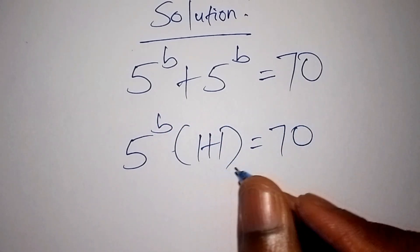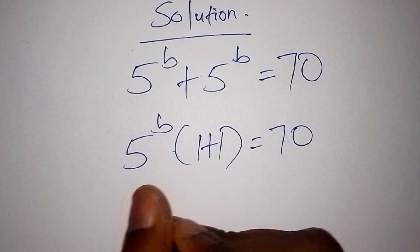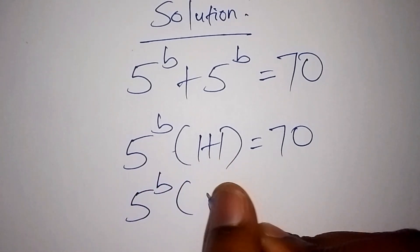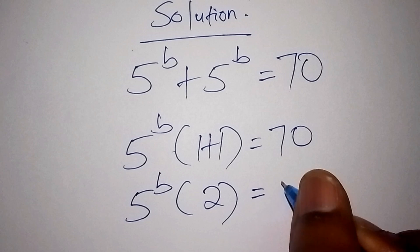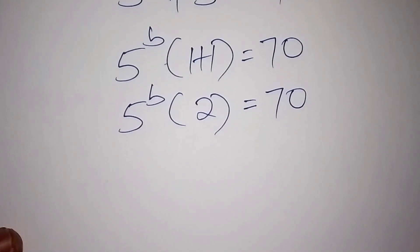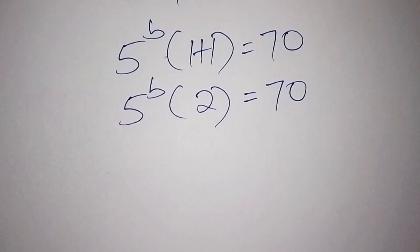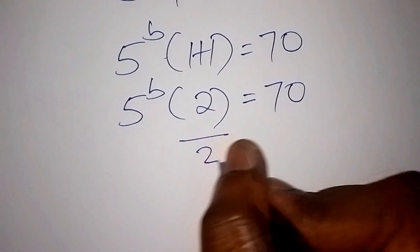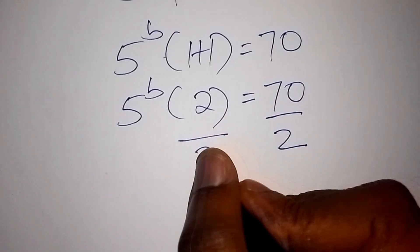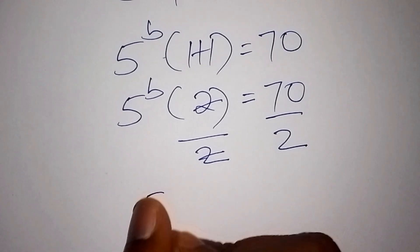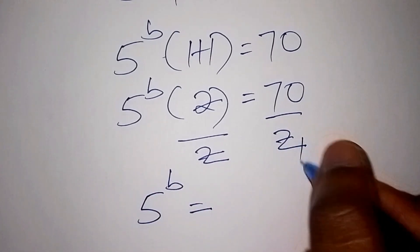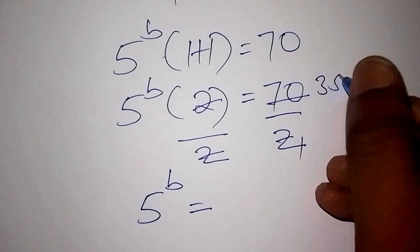Now let us work out the number inside the bracket. We shall have 5 to the power of b into bracket 1 plus 1, which is 2, equals 70. Now we shall divide both sides by 2. So 2 over 2 cancels, and we remain with 5 to the power of b is equals to 70 divided by 2, which is 35.